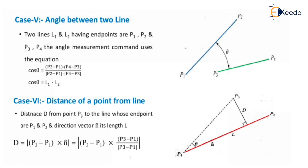Case 4: the distance of a point from a line. As shown in the figure, the distance d from a point p3 to the line with endpoints p1 and p2 and direction vector n-cap of length l is represented as: d = |( p3 − p1) × n-cap| = |(p3 − p1) − [(p3 − p1)·n-cap]·n-cap|. Thank you so much, hope you understand well.